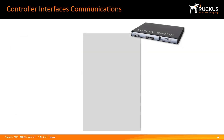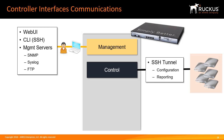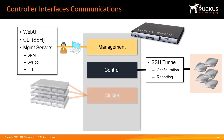The management interface is the web user interface that you log into, and is also used for the CLI. Services such as SNMP, Syslog, and FTP are also communicated via the management interface. The control interface is for the access points, which communicate to the controller primarily via an SSH tunnel; configuration changes are delivered to the access points via this tunnel, and reporting and statistics are also returned. The cluster interface is used exclusively for cluster communications between multiple controllers configured as a cluster, and requires good bandwidth and low latency. It is not recommended that cluster nodes are geographically separated.